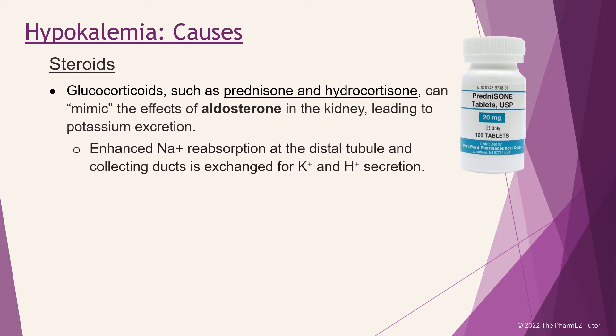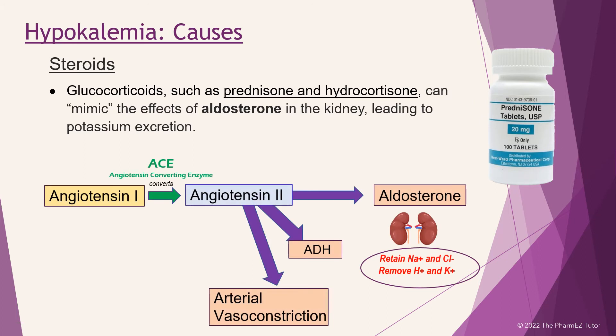Steroids. Glucocorticoids such as prednisone and hydrocortisone can mimic the effects of aldosterone in the kidney, leading to potassium excretion. Enhanced sodium reabsorption at the distal tubule and collecting ducts is exchanged for potassium and hydrogen ion secretion. At the end of the RAS system, aldosterone has its effects on retaining sodium and eliminating potassium and hydrogen ion. This diagram shows glucocorticoids such as prednisone mimicking the effect of aldosterone and creating the same effect on potassium, leading to hypokalemia.